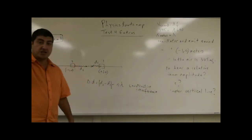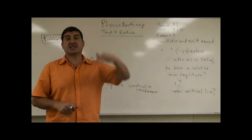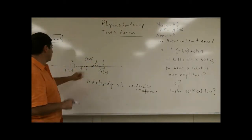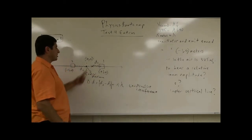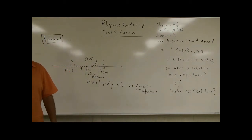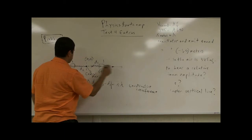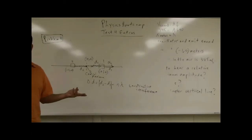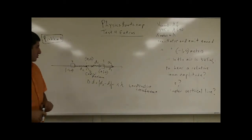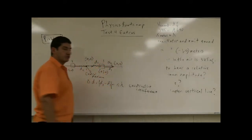When constructive interference occurs, you hear a relatively high volume of sound. The point where the path difference is zero is called the central maximum — the loudest sound possible. But there are other spots where the difference in distances is also an integer multiple of wavelength. You could be on either side, at some arbitrary location, and still satisfy the condition.